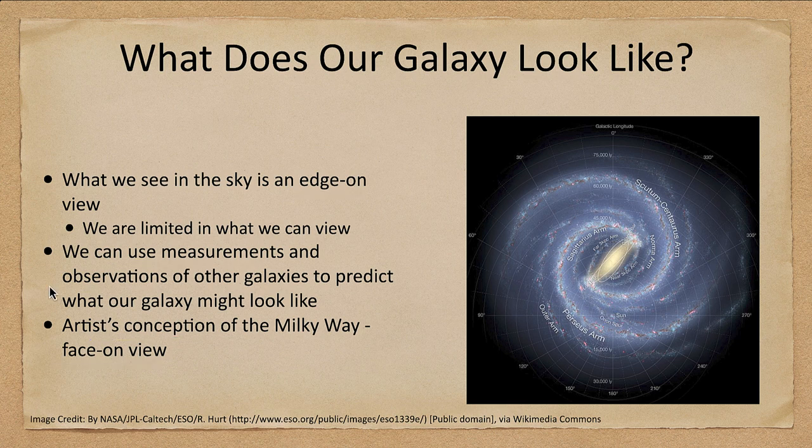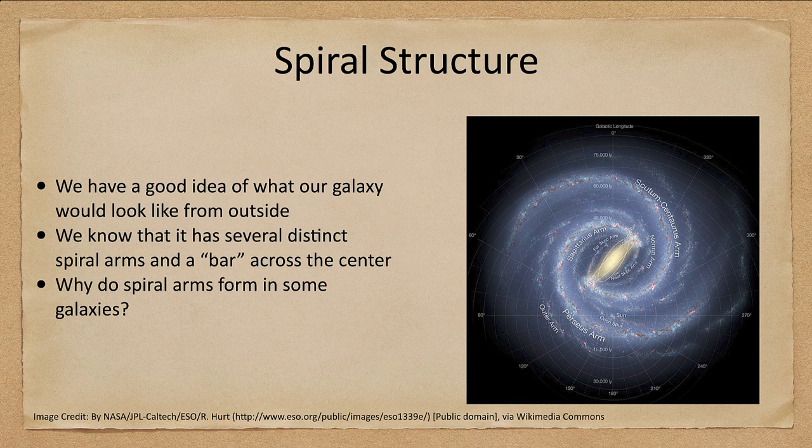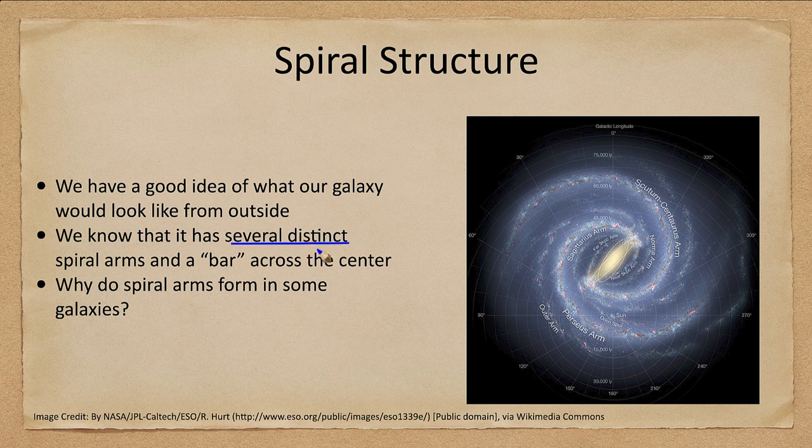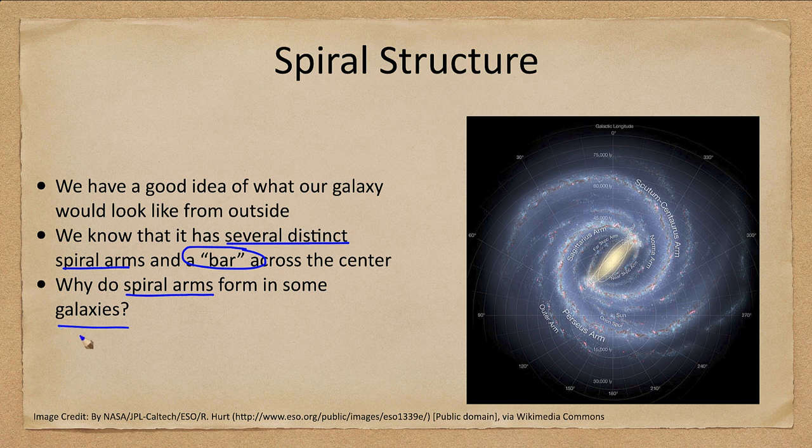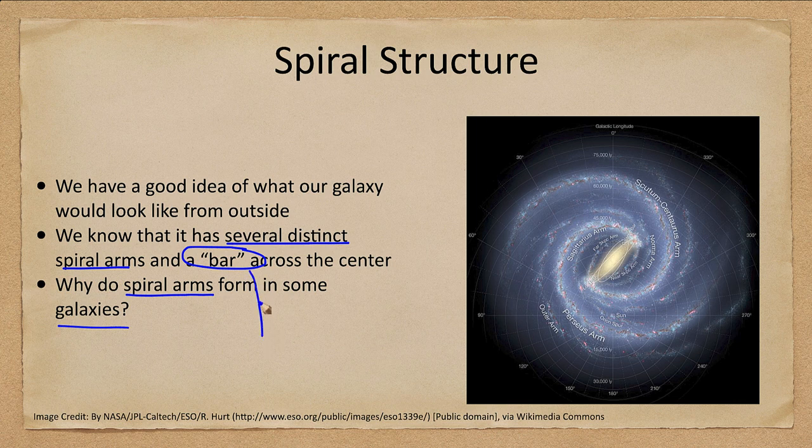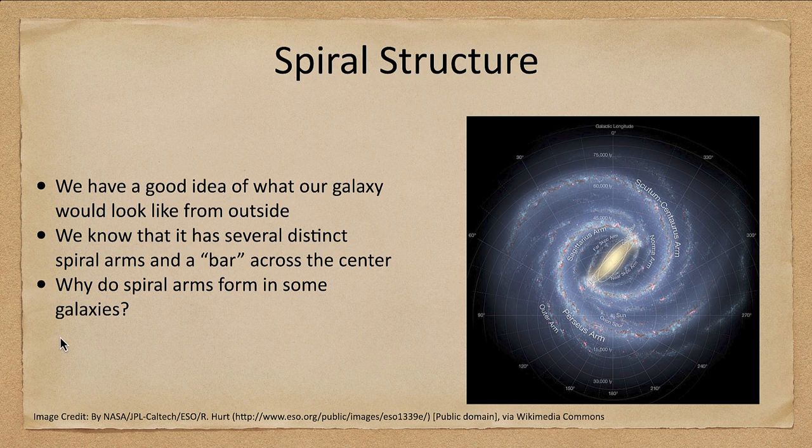Now what about the spiral structure? We have a good idea of what it looks like. We know that there are several distinct arms. We know that there is a bar across the center. A good question is why do spiral arms form in some galaxies. They don't form in all galaxies but some galaxies have spiral arms and some don't. Some of those spiral galaxies have a bar. Some do not. Those are some very good questions when we want to try to better understand spiral structure in galaxies.